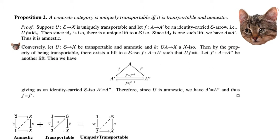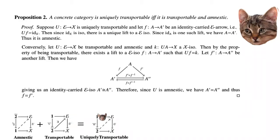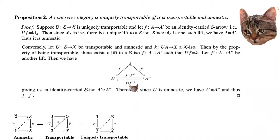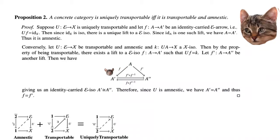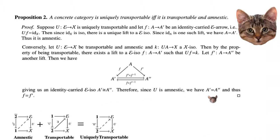Conversely, suppose U: E → X is transportable and amnestic, and we are given an isomorphism k: UA → X. By transportability, there exists a lift to an E-isomorphism F: A → A' with UF = k. If we are given another such lift F': A → A'', we get a commuting diagram where the bottom arrows are isomorphisms — since isomorphisms are closed under composition — and therefore A' is isomorphic to A''. Since U is amnestic, A' must equal A'', and thus F equals F'.